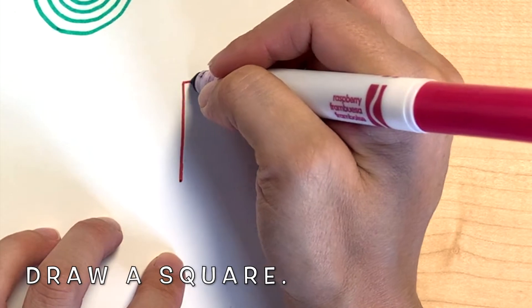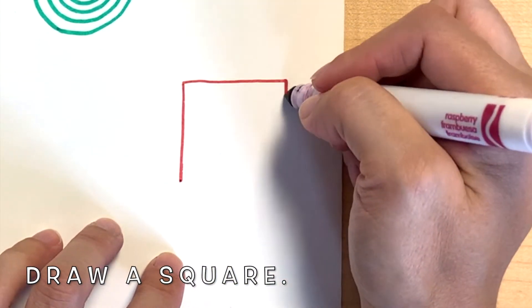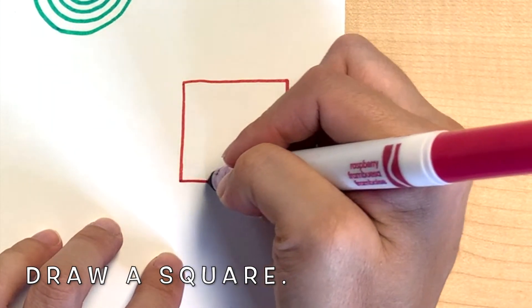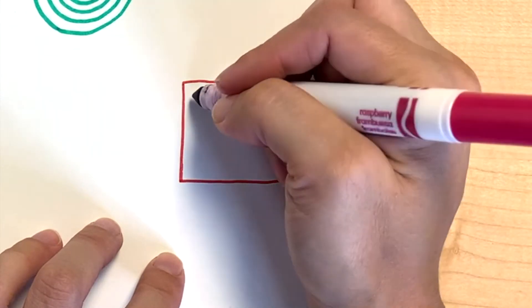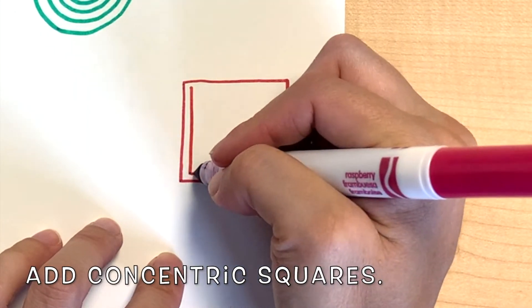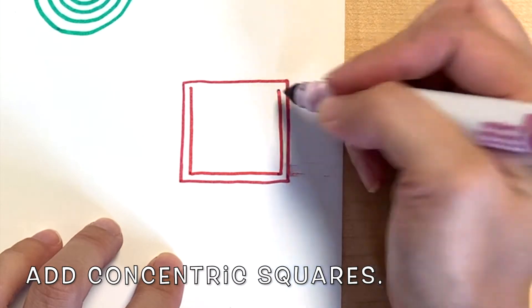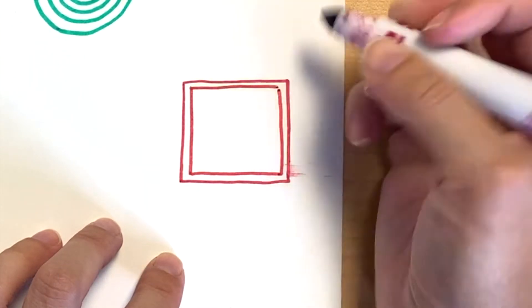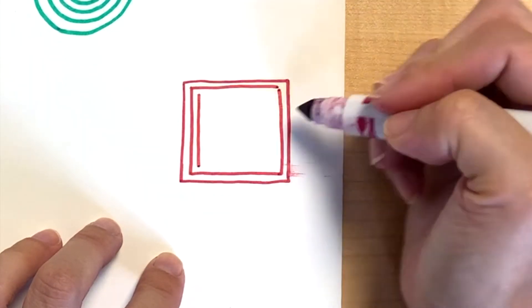Other shapes can be concentric too, like squares and triangles. Concentrate on keeping your lines the same distance from each other. This will mean you'll need to go really slow as you work.